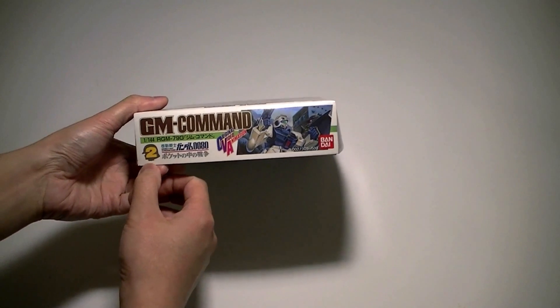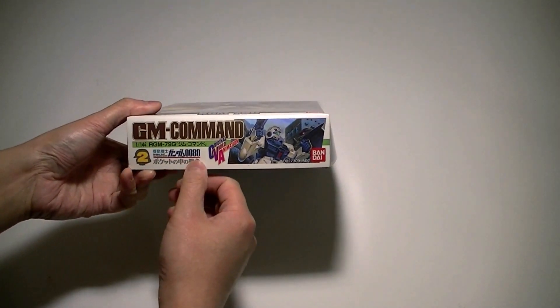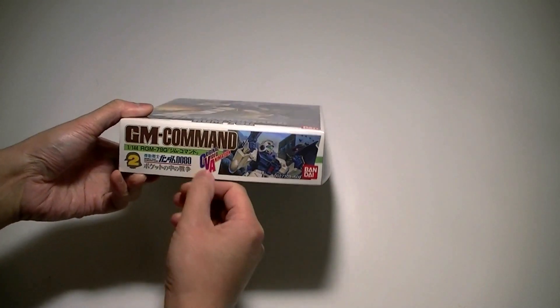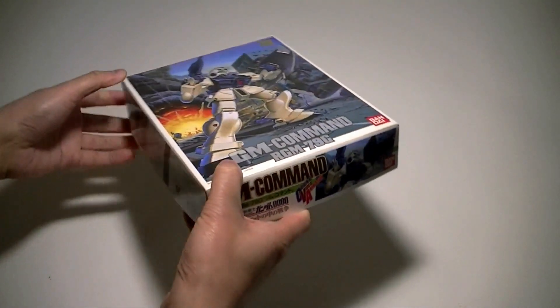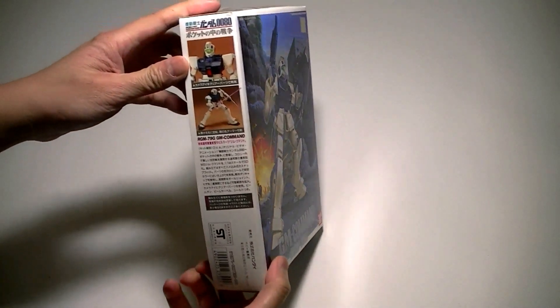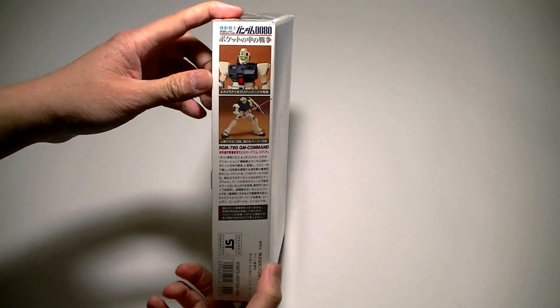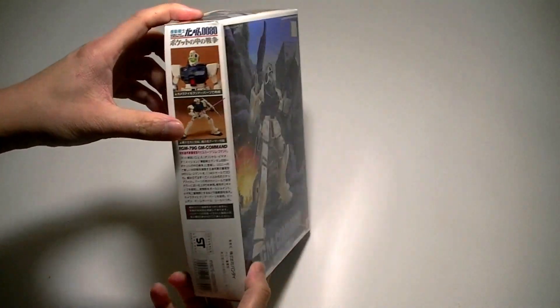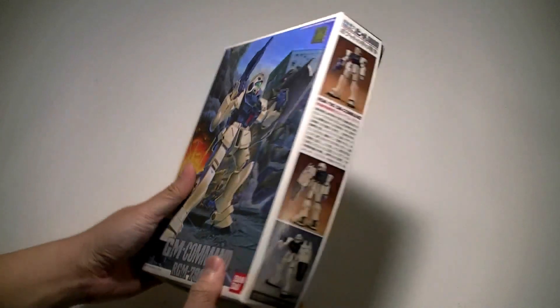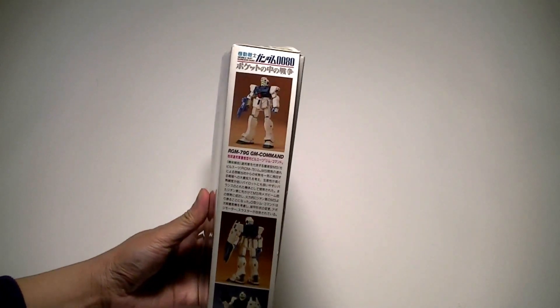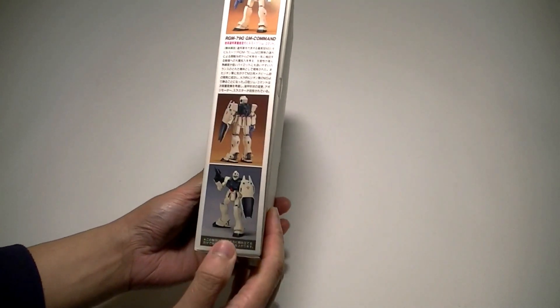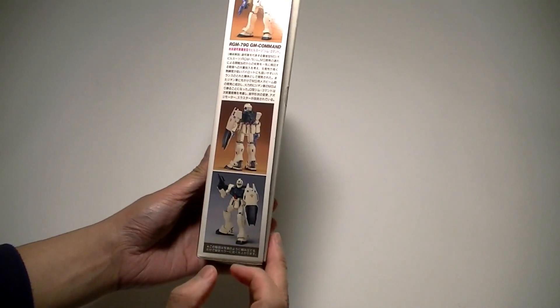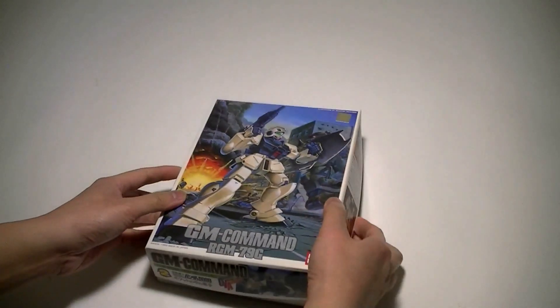This is number 2 in the series. Series name says OVA, so it reminds me of how to pronounce it correctly. We've got some description and pictures on the side of the box, and the unpainted version of the kit. Let's go ahead and open this up.